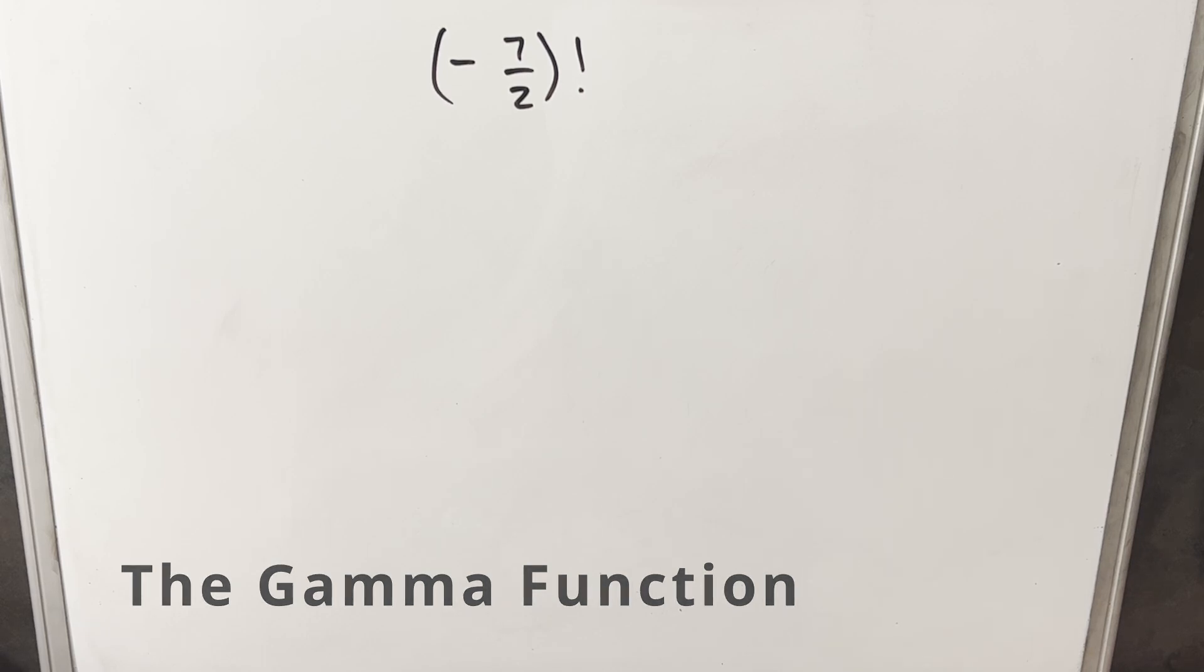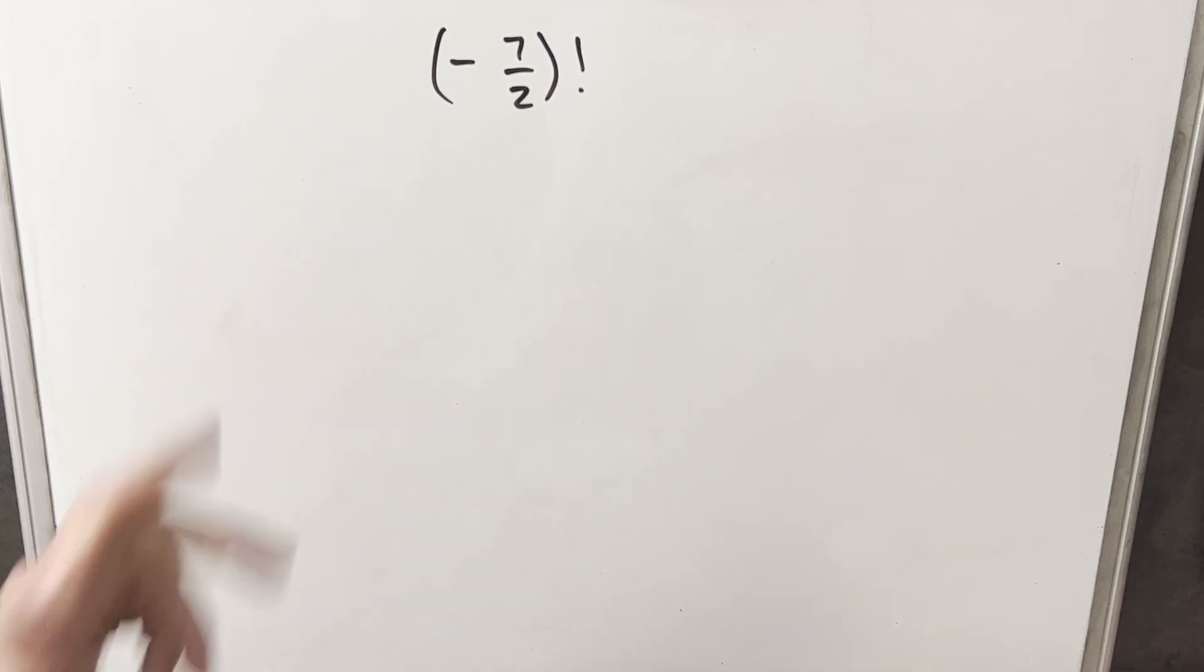We've got minus seven halves factorial, and this may be pretty strange if you're used to seeing factorial in terms of positive integers and zero. But what we're going to do is use the gamma function with this. The gamma function allows us to extend the factorial beyond the positive integers and zero, and it's going to allow us to deal with something like this.